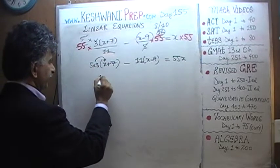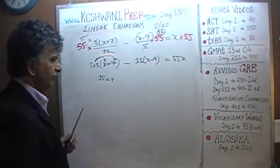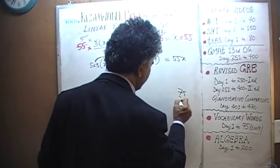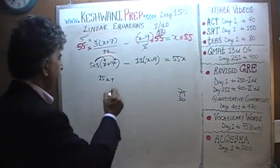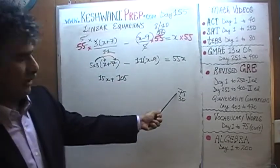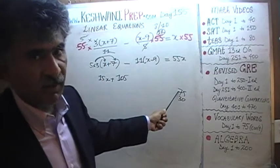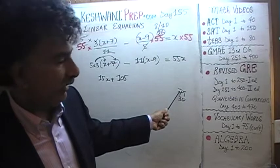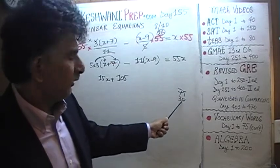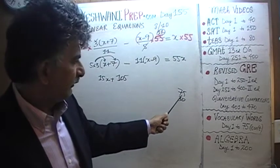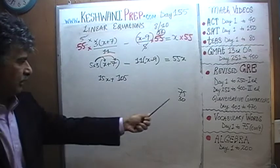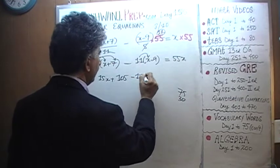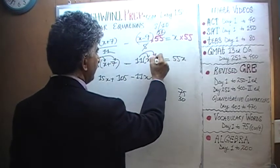Let's open the parenthesis. 15 times x is 15x plus 15 times 7. How much is 15 times 7? I know 15 times 5 is 75. How do I know 15 times 5 is 75? Because 15 times 10 is 150 and half of 150 is 75. So 5 fifteens and 2 more fifteens, 7 fifteens, is 105. And then we have negative 11 times x is negative 11x and then negative times negative is going to be positive and 11 times 9 is going to be 99.